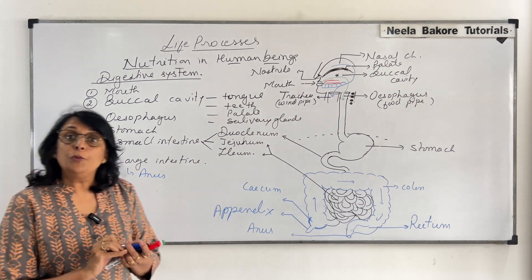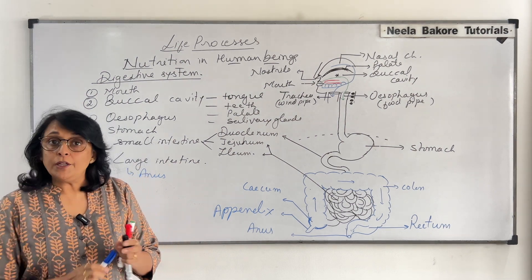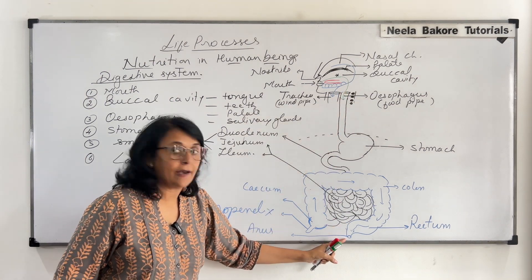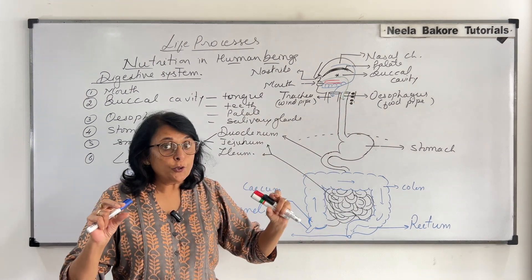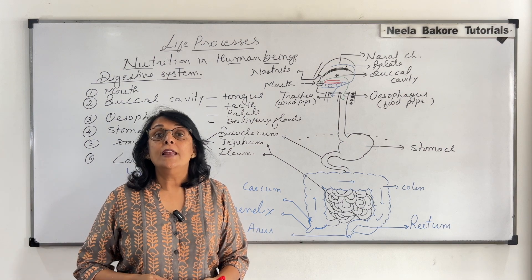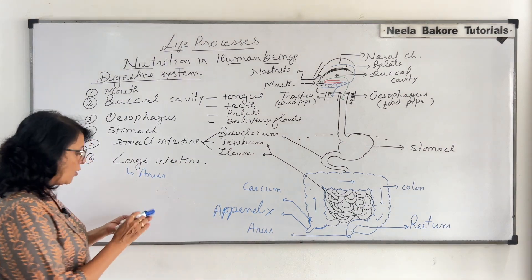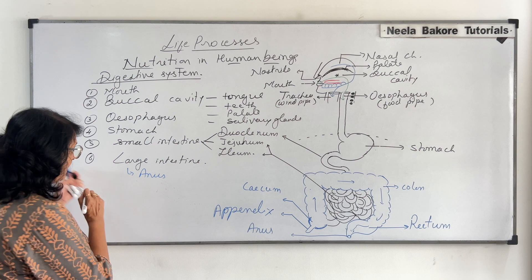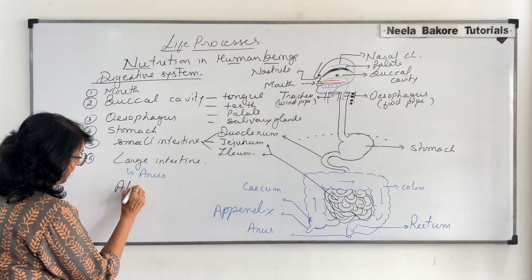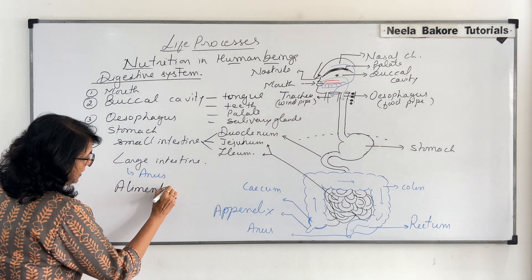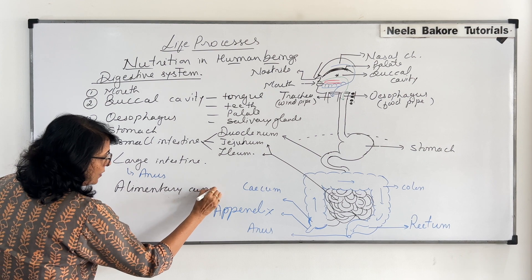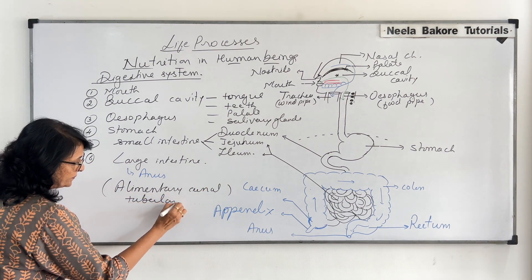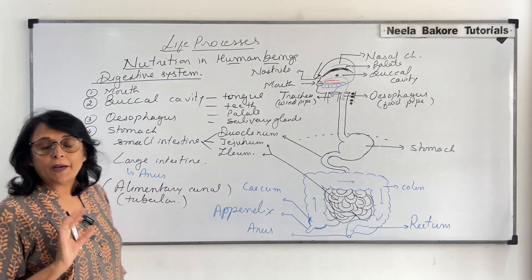If we are talking about only the tubular part — from the mouth all the way to the end — that is known as the alimentary canal. So the alimentary canal includes all the tube parts of the digestive system.